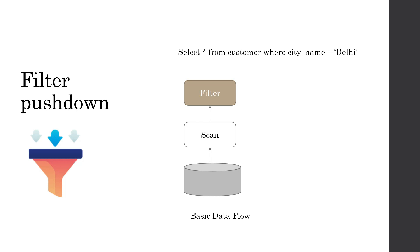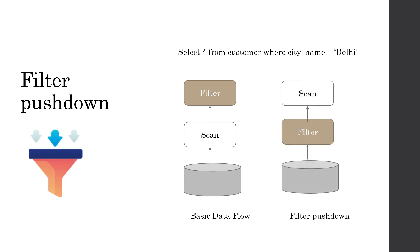But if we look at this basic data flow, it is not going to be performance efficient, because even though we are interested only in a handful of records, we are actually scanning the entire table, which may be really huge. So this is not really the right way to execute a query. A better way introduced in many databases, including Spark, is the concept of filter push down, which means I would read only what I need.